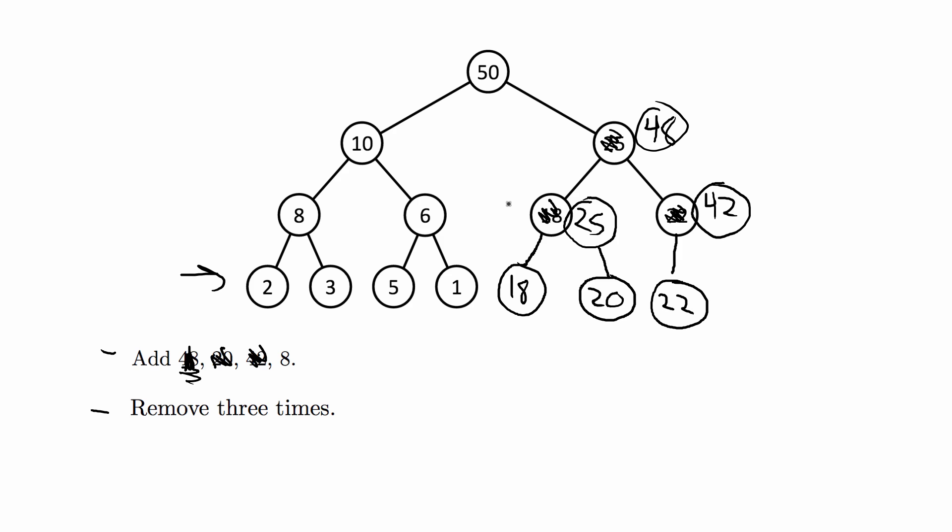The last one says 8. For heaps, you can have duplicate values. Even though we already have an 8 here, we can add another 8 because duplicates are allowed. We add 8 and we're done with that one. We're done with all the adding.